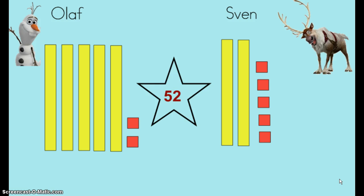Compare Olaf and Sven's work. Who made 52 correctly? Write the character's name on your homework sheet. We'll see if you picked the correct character tomorrow and we will also discuss the mistake that the character who did not make 52 correctly made. See you then!